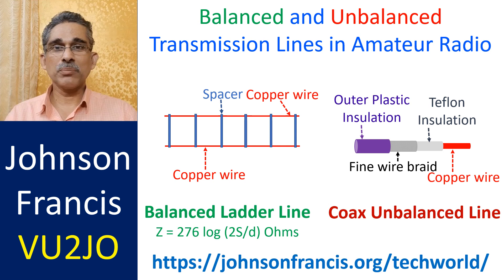The impedance of the line may vary from 300 ohms to 600 ohms. Impedance is calculated using the formula Z = 276 × log(2S/D) ohms, where Z is the feeder line impedance, S is the centre-to-centre distance between the conductor wires, and D is the diameter of the conductors. The dimensions are in inches.